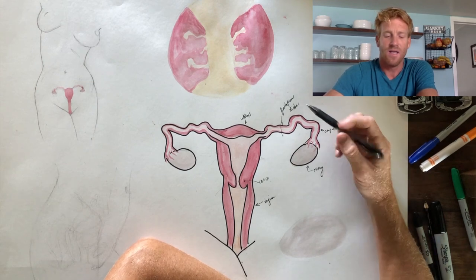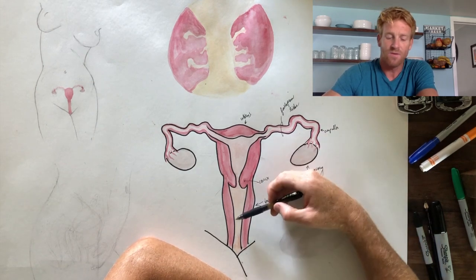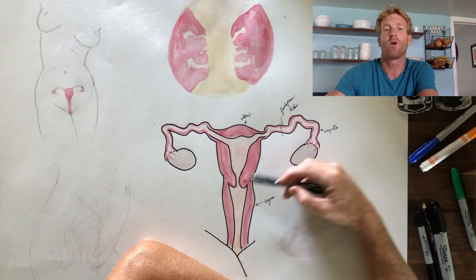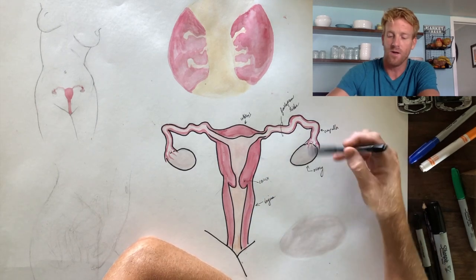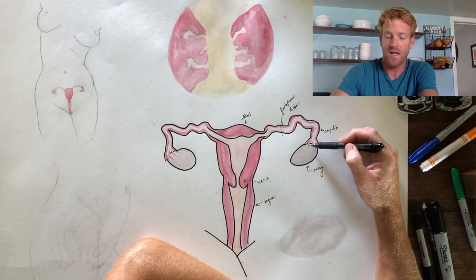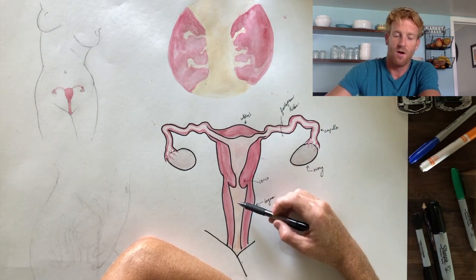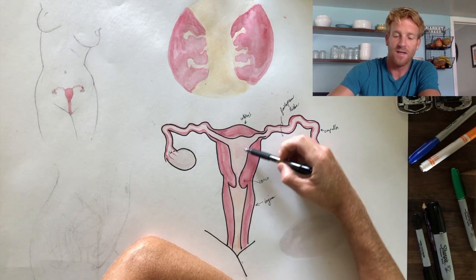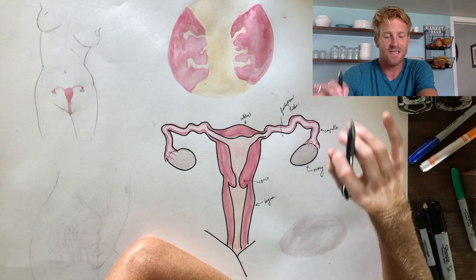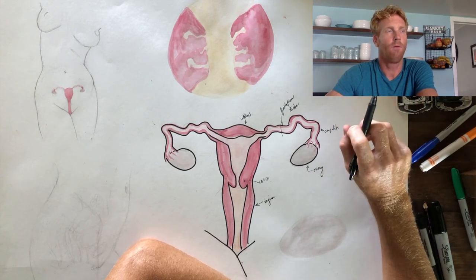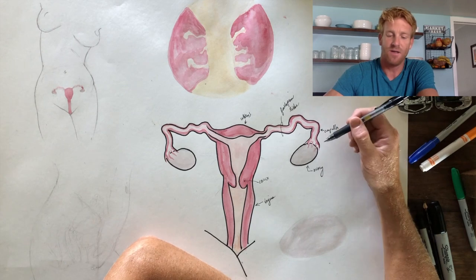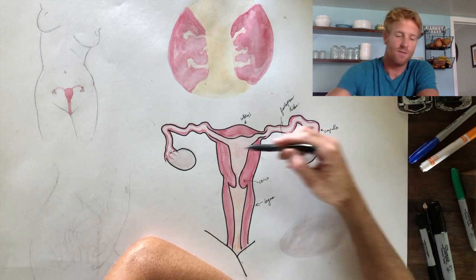What's even crazier is that these contractions propel the sperm towards the correct ovary — they alternate each month. So if this is the ovary that releases the egg, the sperm deposited here are directed towards the correct fallopian tube. This just gives you a sense of how powerful the body's ability to fertilize an egg is.